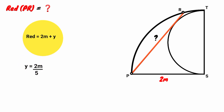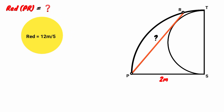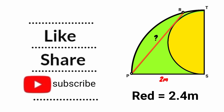Substituting back: the length of the red line = 2 + 2/5 = (10 + 2)/5 = 12/5 = 2.4 meters. Thank you for watching — please like, share, subscribe, and turn on notifications.